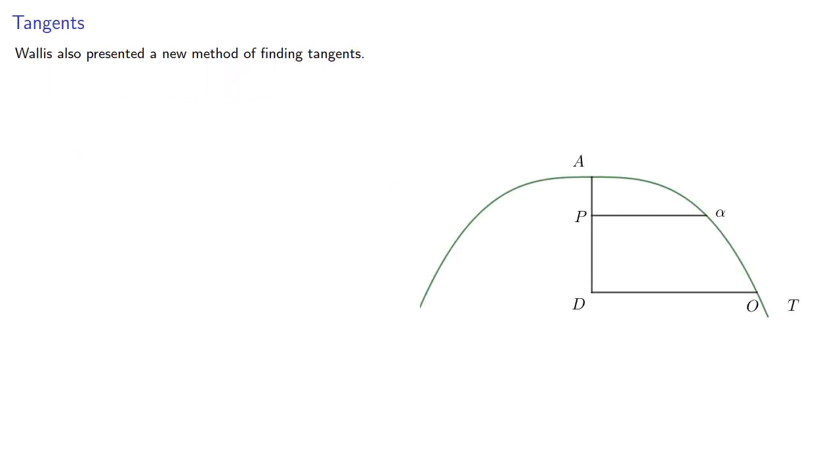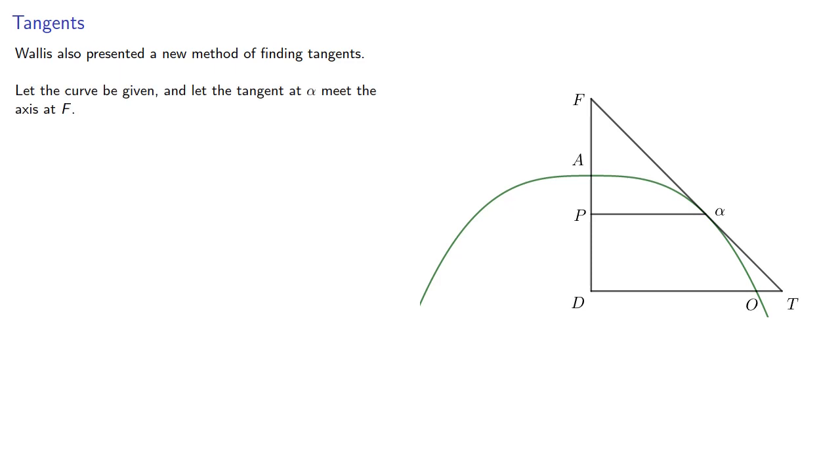Wallace also presented a new method of finding tangents. So again let the curve be given, and let the tangent at alpha meet the axis at some point F. So Wallace let PF equal F, the sub tangent, PA equal to D, DP equal to A, and P alpha equal to P.